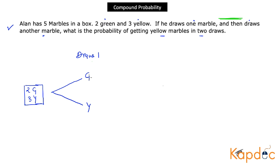The probability of getting a green on the first draw is 2 over 5, since there are two green marbles out of five total. The probability of getting a yellow is 3 over 5. Now let's proceed to the second draw, where things get a little more interesting.